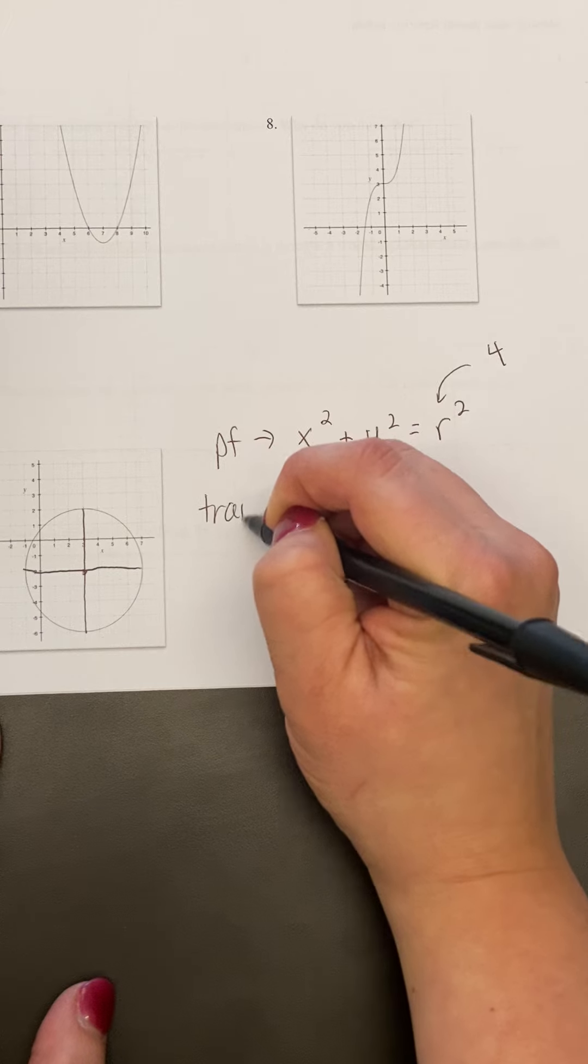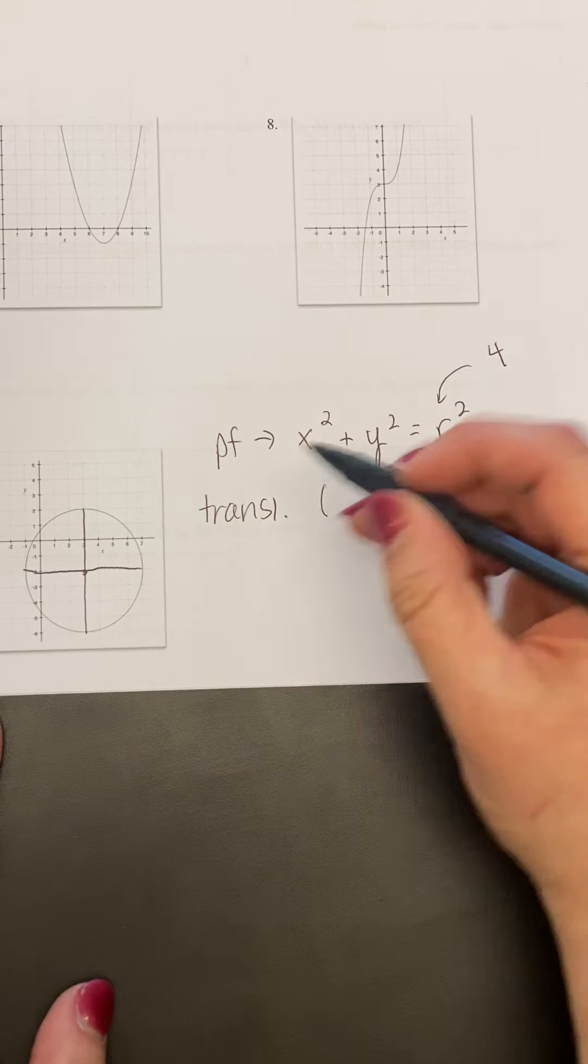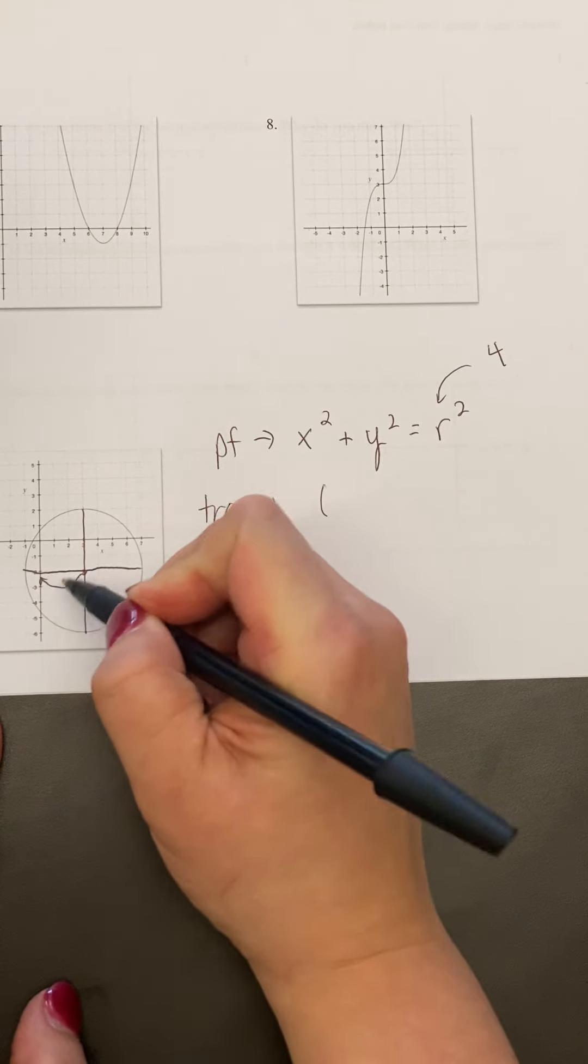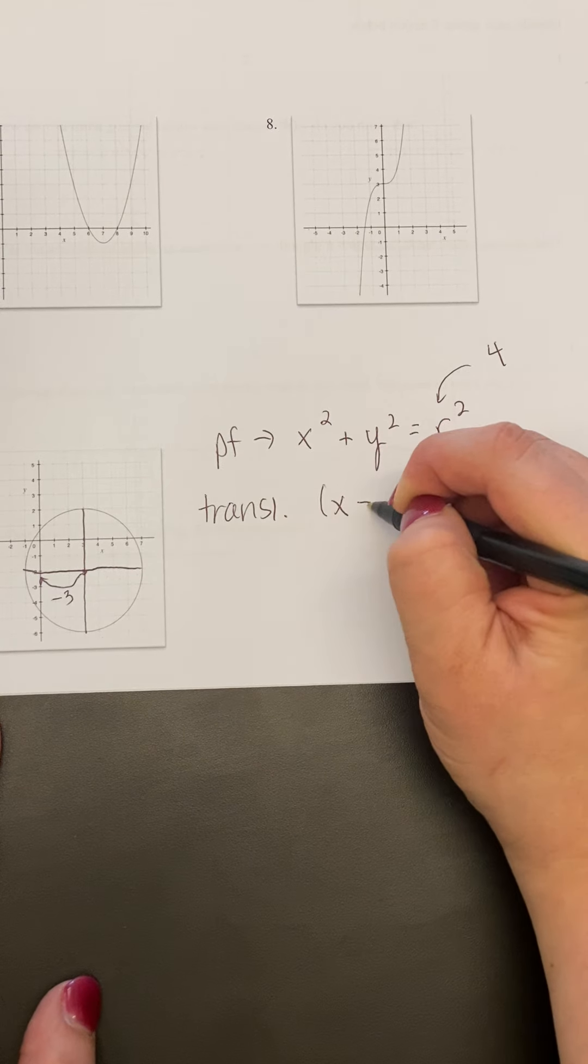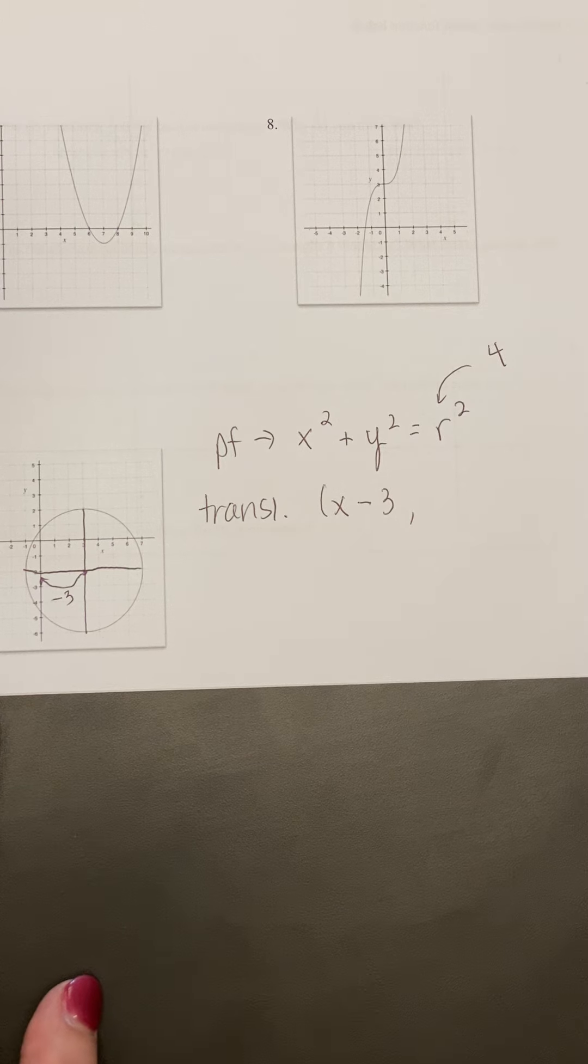So my translation is, well let's see. Well I've got to move 3 this way, which is in the negative direction. So for x, I'm going to take each value and it's going to be x minus 3.